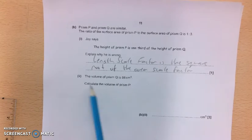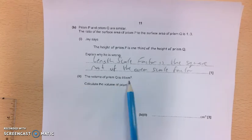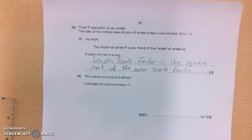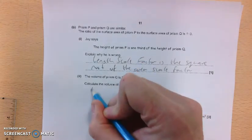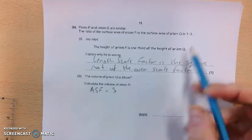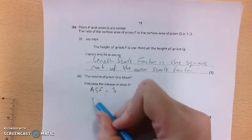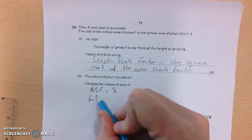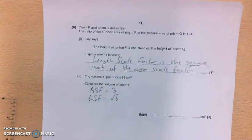Now we're going to use some of those ideas now in part 2. So the volume of prism Q is 86. So we've got to work out the volume of the smaller prism. Now we know that the area scale factor is 3. We get that from our ratio. So as we've said here, the length scale factor is going to be the square root of 3.